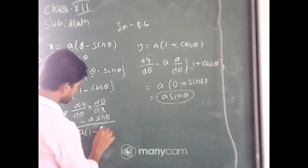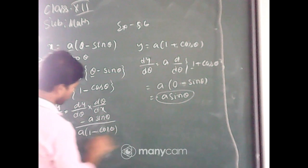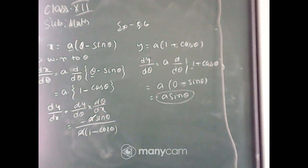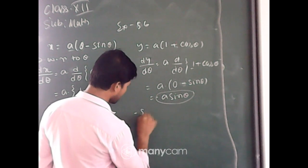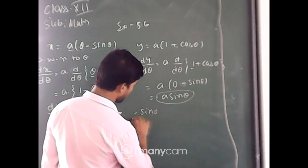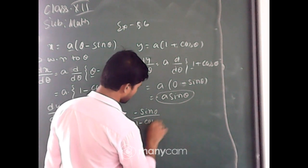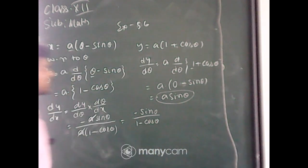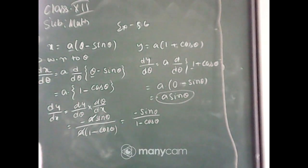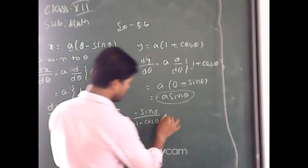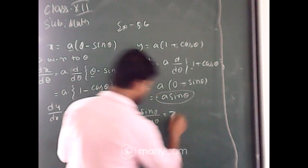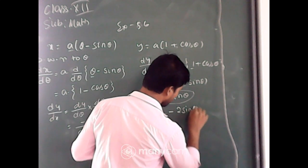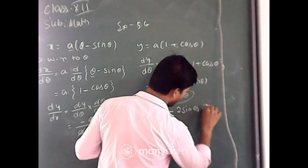a into 1 minus cos theta — now this a and this a will cancel each other. So the final answer is minus sin theta by 1 minus cos theta. You can leave it here, or you can apply one more formula. We know that sin theta is equal to 2 sin(theta/2) into cos(theta/2), so here it will be 2 sin(theta/2) into cos(theta/2).